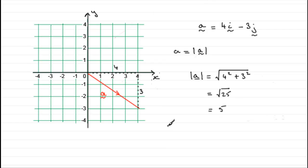So, if I had a vector, say, b, and b was the vector minus 2i plus 5j. Okay, what would the magnitude of this vector be?